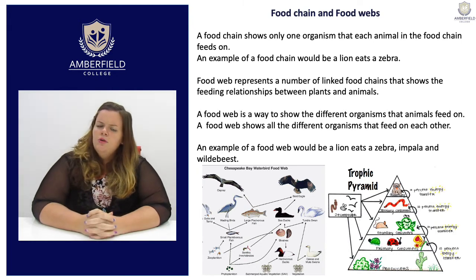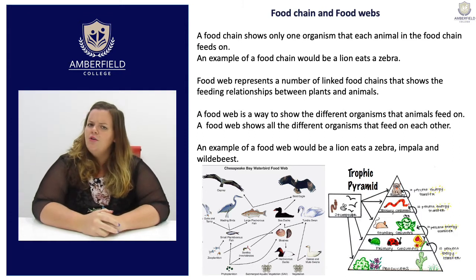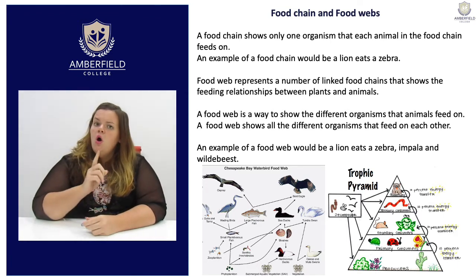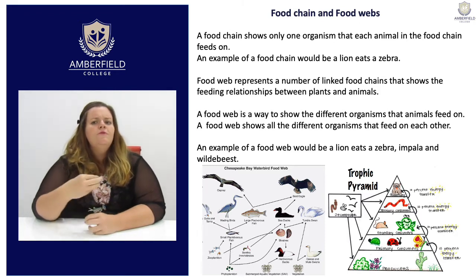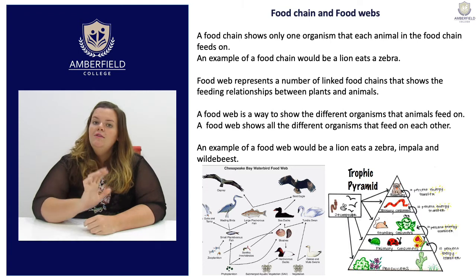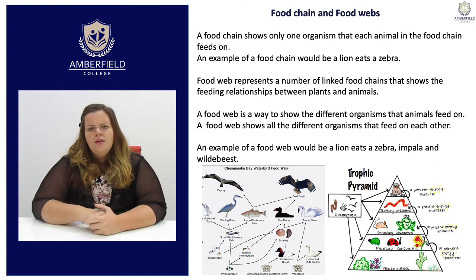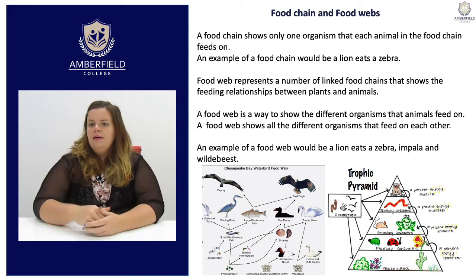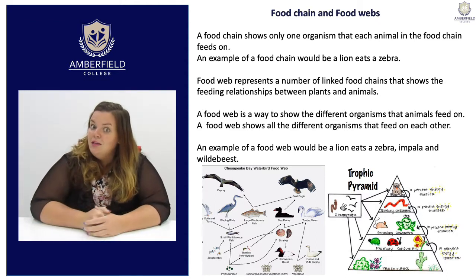Now we're going to take a deeper look into food chains and food webs. A food chain only shows one organism that each animal in the food chain feeds on — it only involves one organism. An example of a food chain would be: a lion eats a zebra, a tiger eats an antelope, or a crocodile eats an impala.